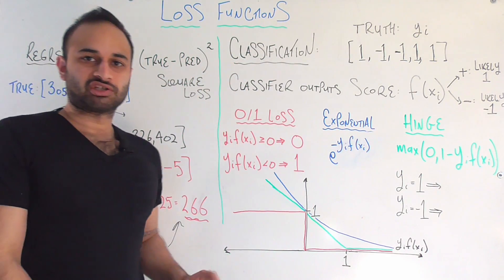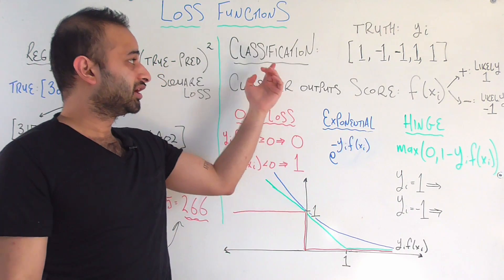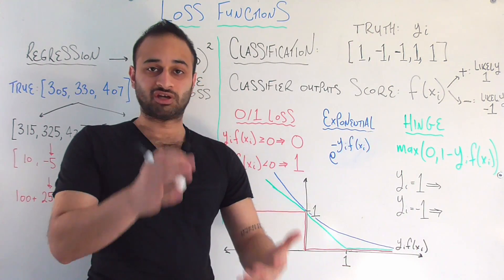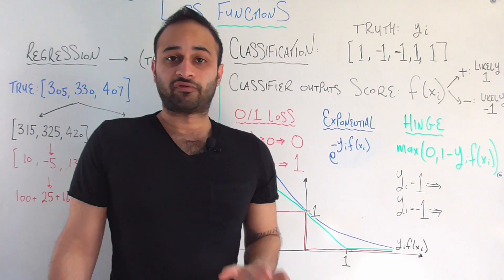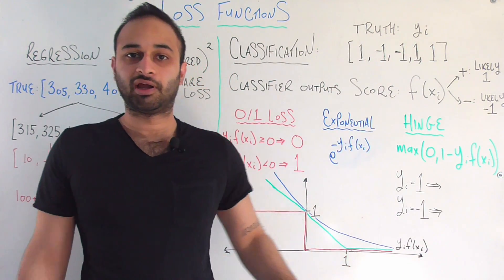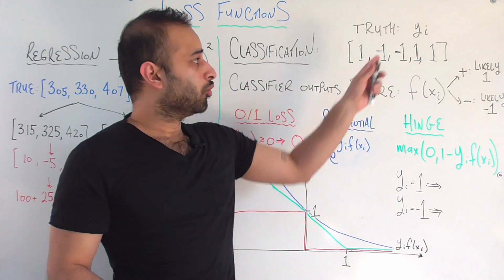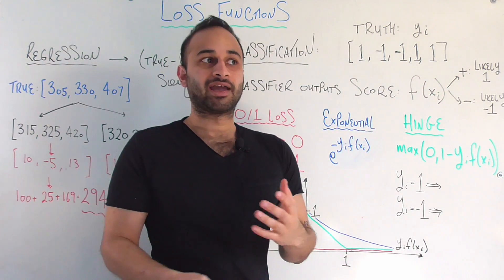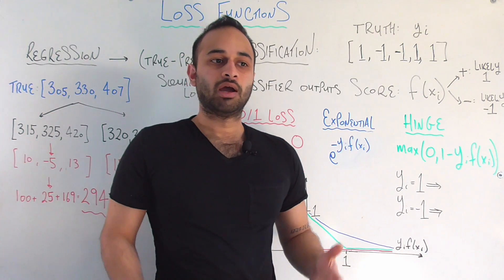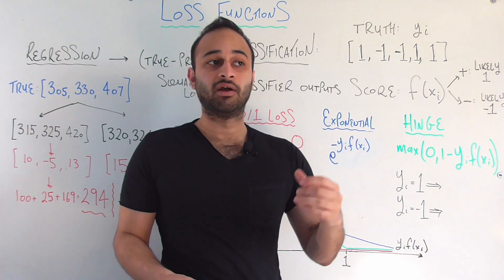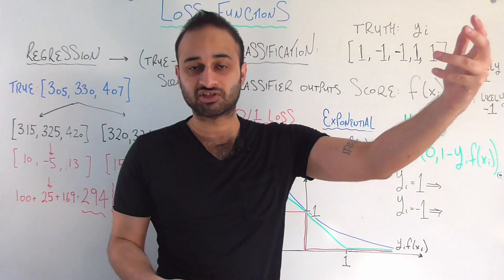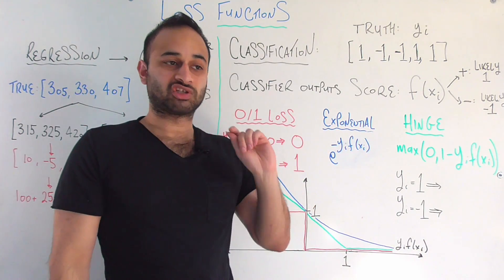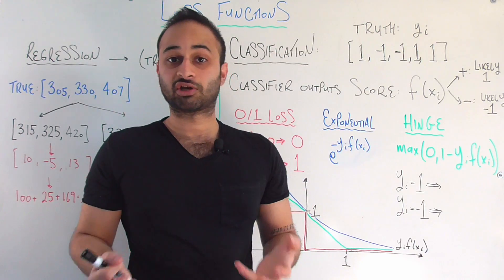Now let's move to the classification case, where things get more interesting. In a binary classification problem, you're predicting an observation as either class 1 or class negative 1. To put this in real-world terms: we're trying to predict if someone will finish the marathon above or below average time — above average is class 1, below average is class negative 1. Whatever model we build, we put in information about the athlete and the course — collectively called x sub i — and get a score from our classifier.